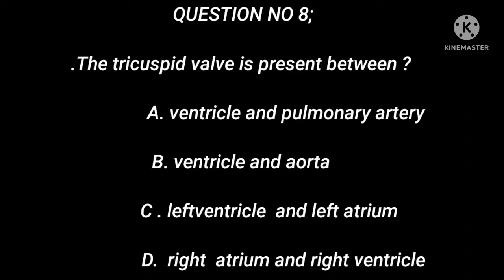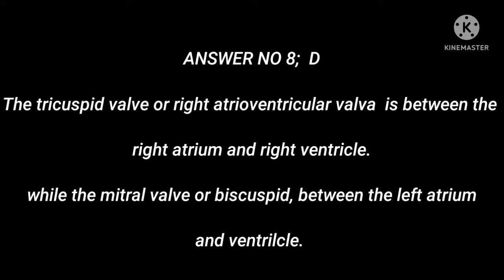Question number 8: The tricuspid valve is present between — A. Ventricle and pulmonary artery. B. Ventricle and aorta. C. Left ventricle and left atrium. D. Right atrium and right ventricle. Answer number 8: D. The tricuspid valve, or right atrioventricular valve, is between the right atrium and right ventricle. While the mitral valve, or bicuspid, is between the left atrium and ventricle.